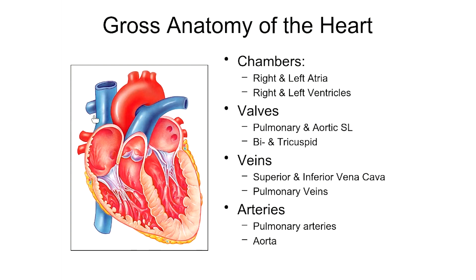Our first vessel is what's known as the superior vena cava. It is a vein returning deoxygenated blood to the right atrium, and the blood returning via the superior vena cava is coming from areas of the body that are above the level of the heart. There's a little opening in the wall of the right atrium that allows that blood to make its way back into the right atrium. This is what's known as the inferior vena cava.